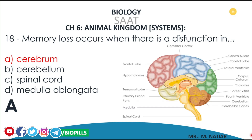Let's look at the different regions in our brain. Firstly, we have the cerebrum, which is made up of two hemispheres — right and left. Then we have the cerebellum.